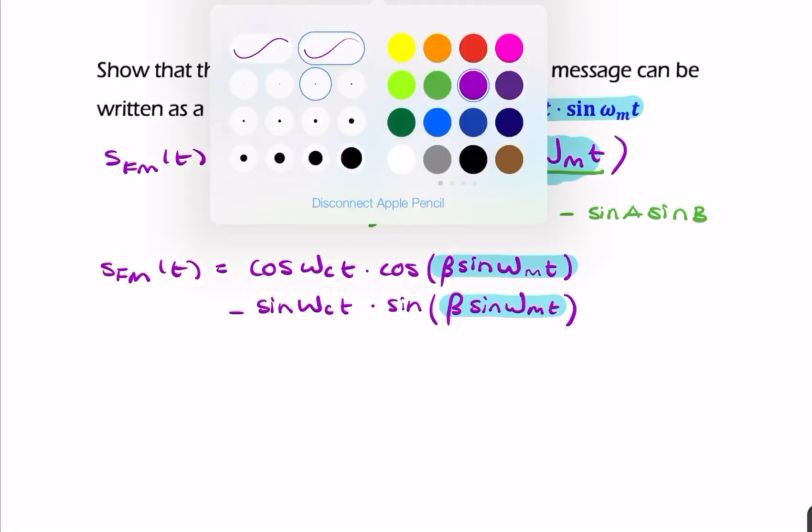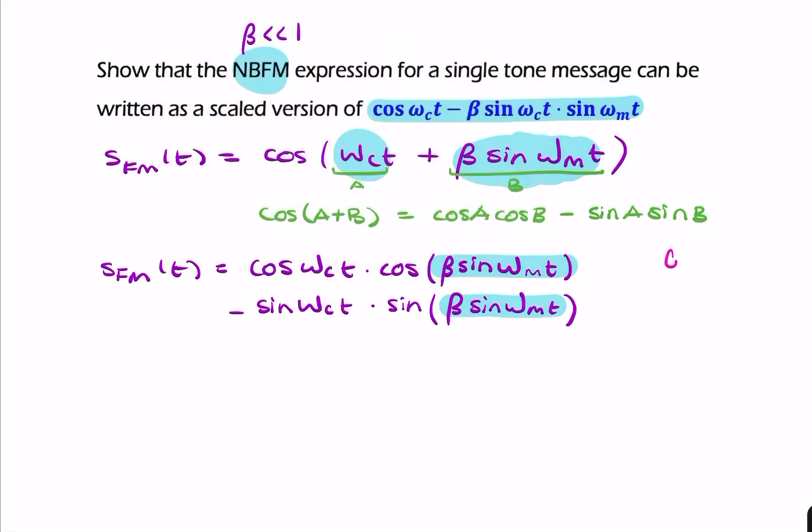Remember for small angles, when θ is very small, cos θ is almost 1, and sin θ is almost θ. This is called the small angle approximation, and it's true for θ in radians.